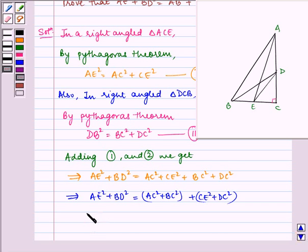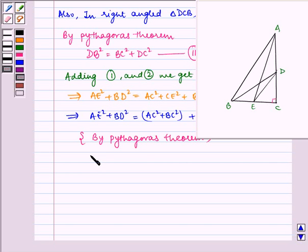By Pythagoras theorem, in triangle ABC, we have AB square is equal to AC square plus BC square.